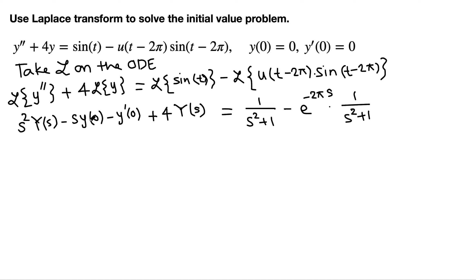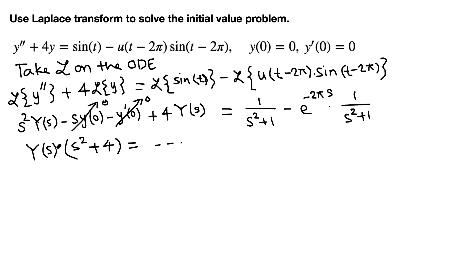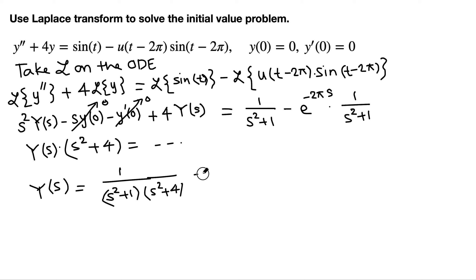Applying initial conditions y(0) = 0 and y'(0) = 0, those two terms vanish. We factor out Y(s) on the left, giving (s² + 4)·Y(s) on the left side. Dividing both sides by (s² + 4) to isolate Y, we get Y = 1/((s² + 1)(s² + 4)) minus e^(−2πs)/((s² + 1)(s² + 4)).